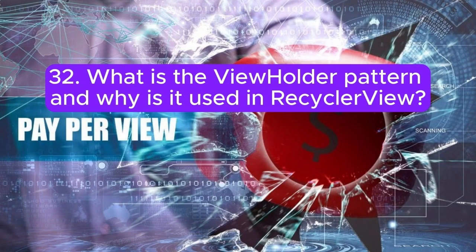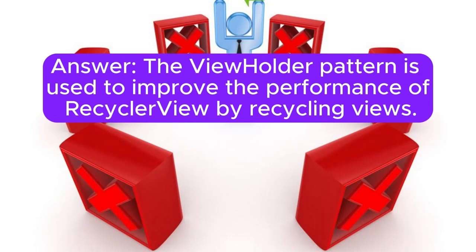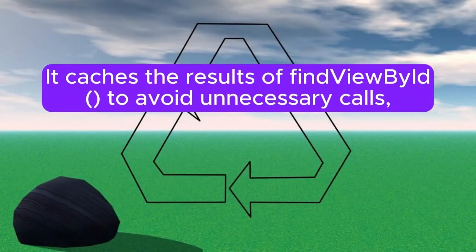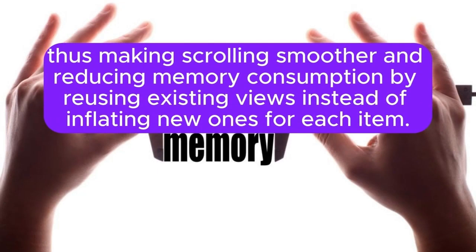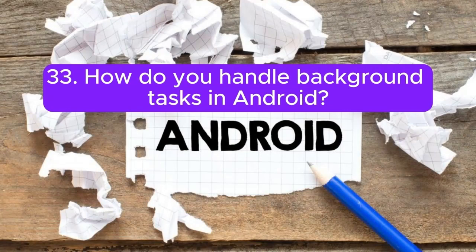Question 32: What is the ViewHolder pattern and why is it used in RecyclerView? The ViewHolder pattern is used to improve the performance of RecyclerView by recycling views. It caches the results of findViewById to avoid unnecessary calls, making scrolling smoother and reducing memory consumption by reusing existing views instead of inflating new ones for each item.